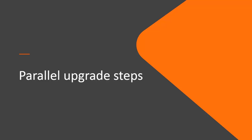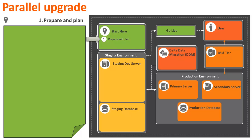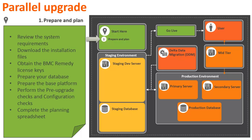Now let's look at the end-to-end steps of the parallel upgrade process for the BMC Remedy ITSM suite. The first stage is to prepare for the upgrade. At this stage, you must review the system requirements, download the installation files, obtain the BMC Remedy license keys, prepare your database, prepare the base platform, perform the pre-upgrade checks and configuration checks, and complete the planning spreadsheet.